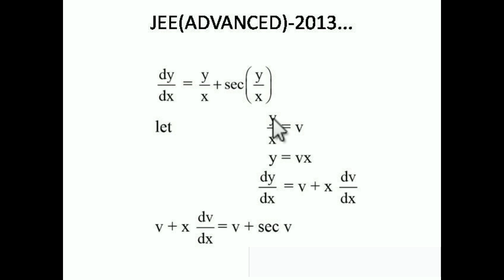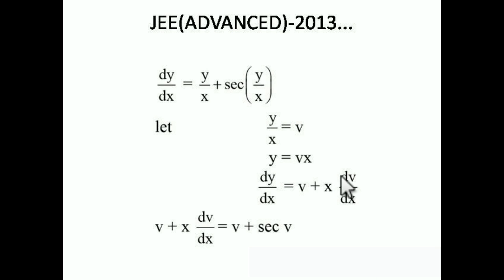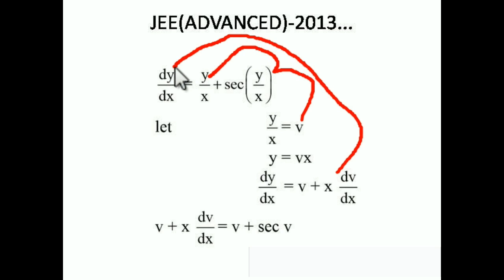This type of problem was also solved in JEE Mains problems. Let v = y/x, so y = vx. Differentiating both sides using the product rule: dy/dx = v + x · dv/dx. Substituting v = y/x and dy/dx = v + x·dv/dx into the equation, the v and v cancel out, leaving: x · dv/dx = sec v.